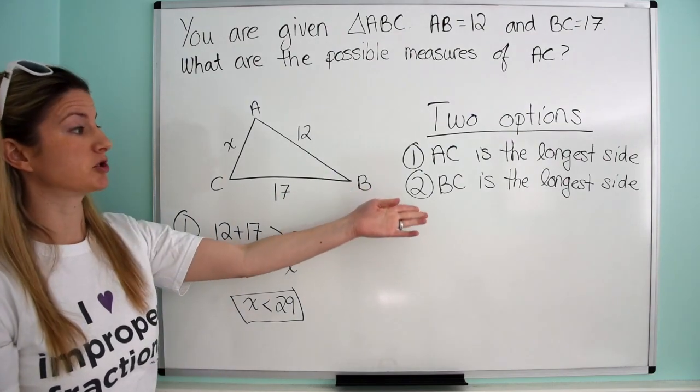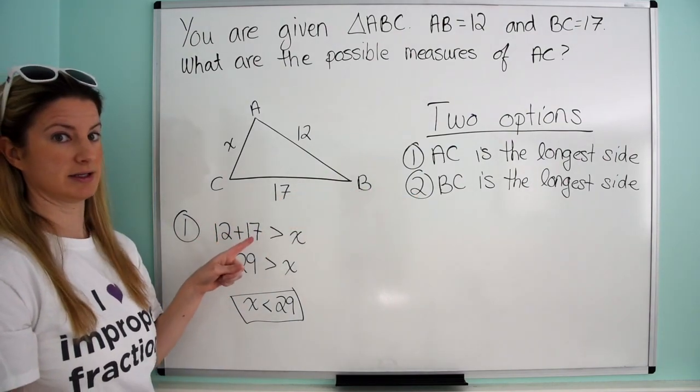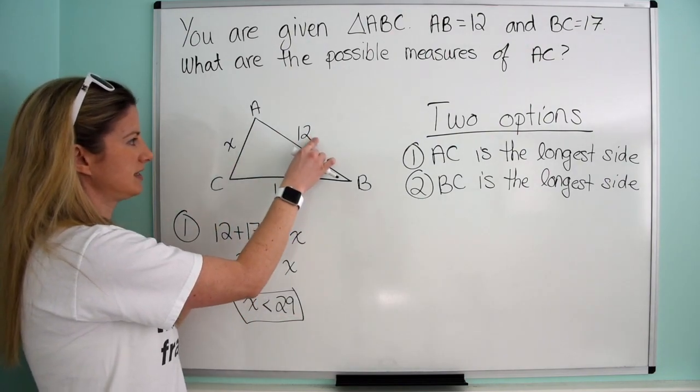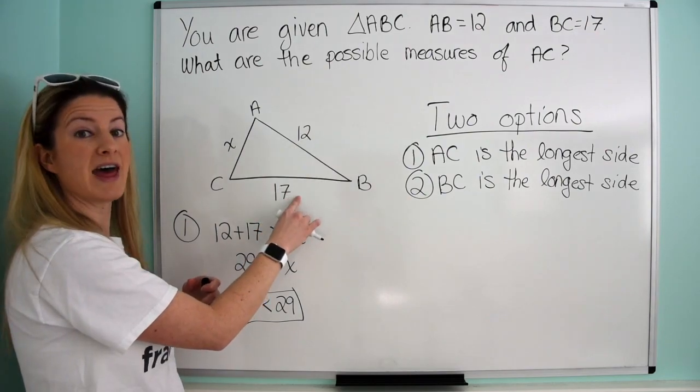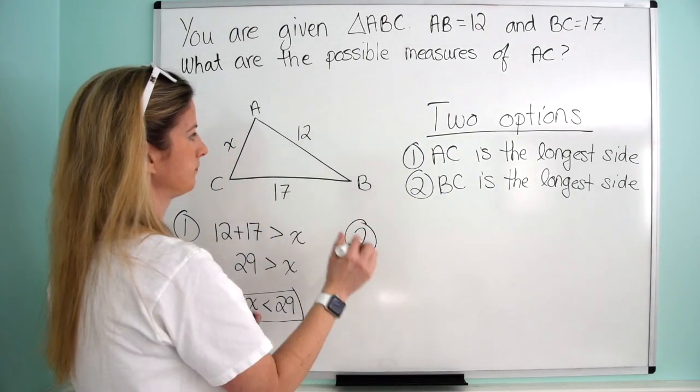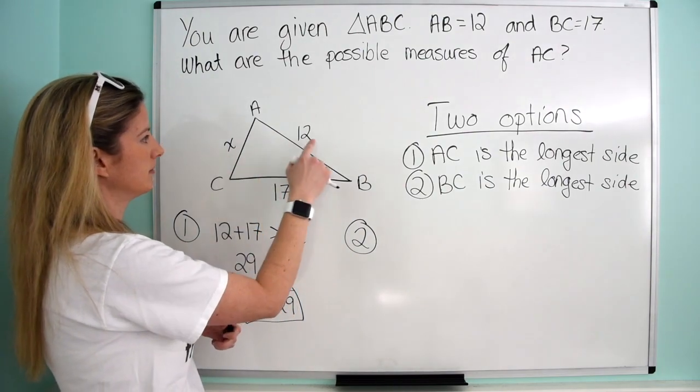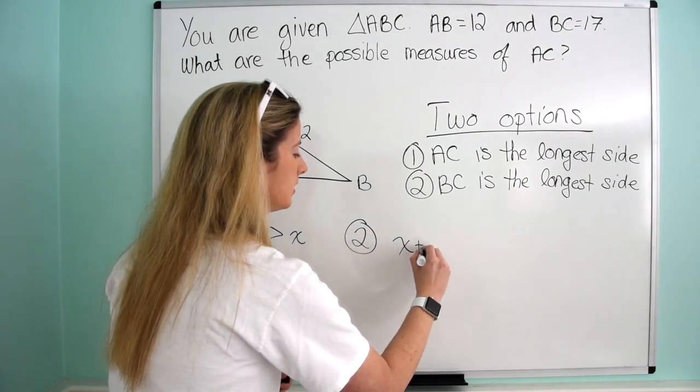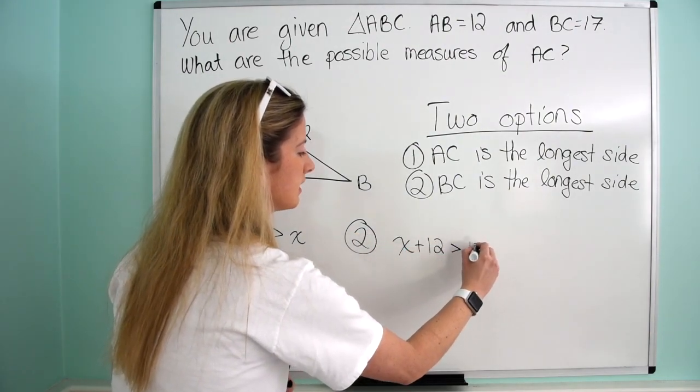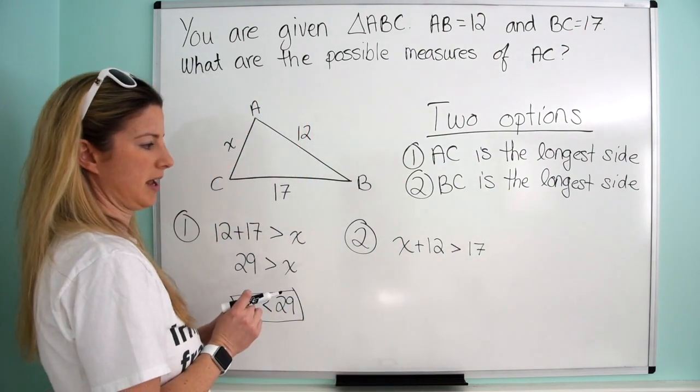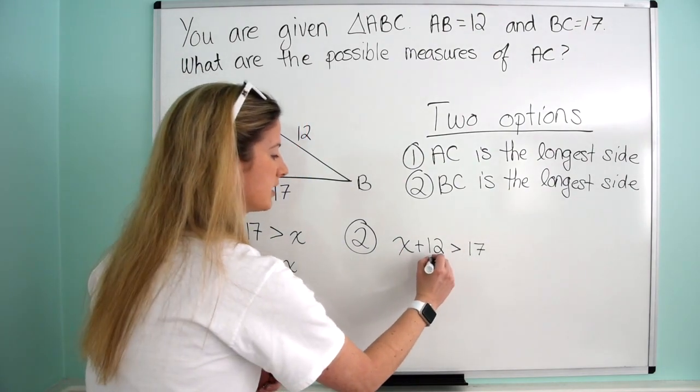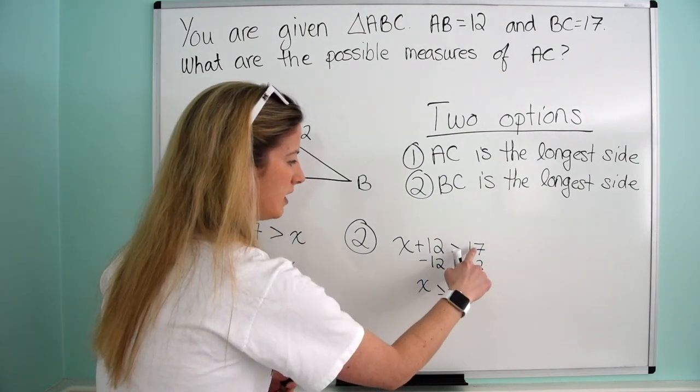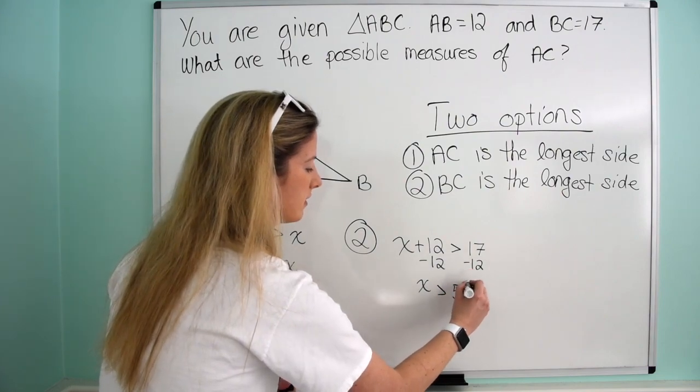Now let's think about option two, where BC is the longest side. That means AC plus AB must be greater than BC. So X plus 12 must be greater than 17. Subtracting 12 from both sides, X is greater than 5.